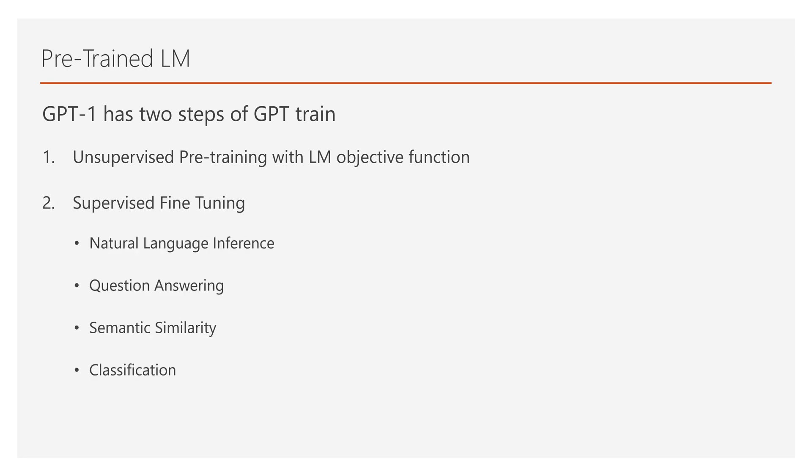Basically, there are two steps for GPT-1 to perform multiple NLP tasks. First is language model training, which they call pre-training of a language model. Second is fine-tuning the language model with specific task data, but with no additional nodes or layers added onto the pre-trained language model. Let me discuss this further after we understand why GPT-1 chose the Transformer decoder as its main design.